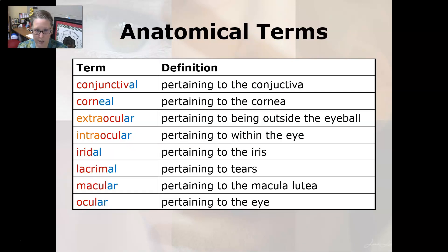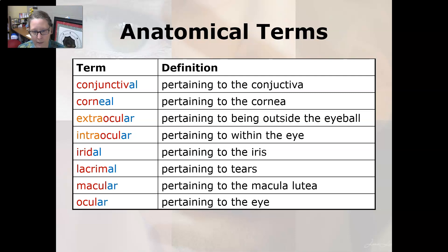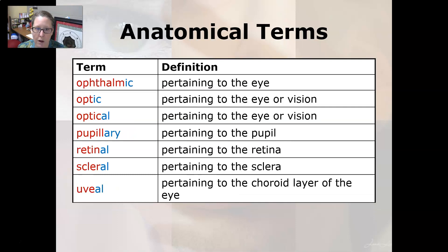Some anatomical terms: conjunctival is pertaining to the conjunctiva. Corneal is pertaining to the cornea. Extraocular is pertaining to being outside of the eyeball, whereas intraocular is pertaining to within the eye. Iridal is pertaining to the iris. Lacrimal is pertaining to tears. Macular is pertaining to the macula lutea. Ocular is pertaining to the eye. Ophthalmic is pertaining to the eye.